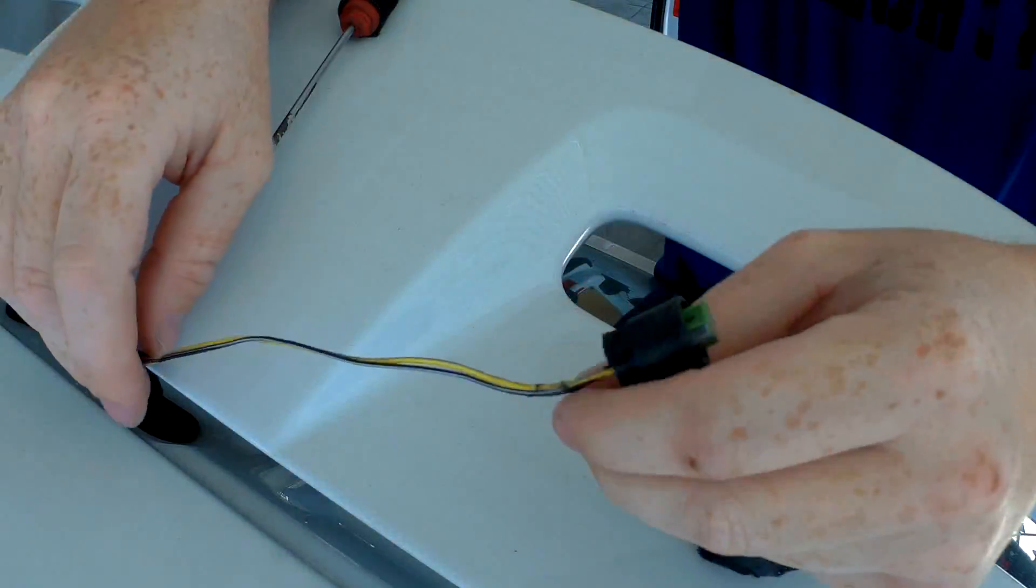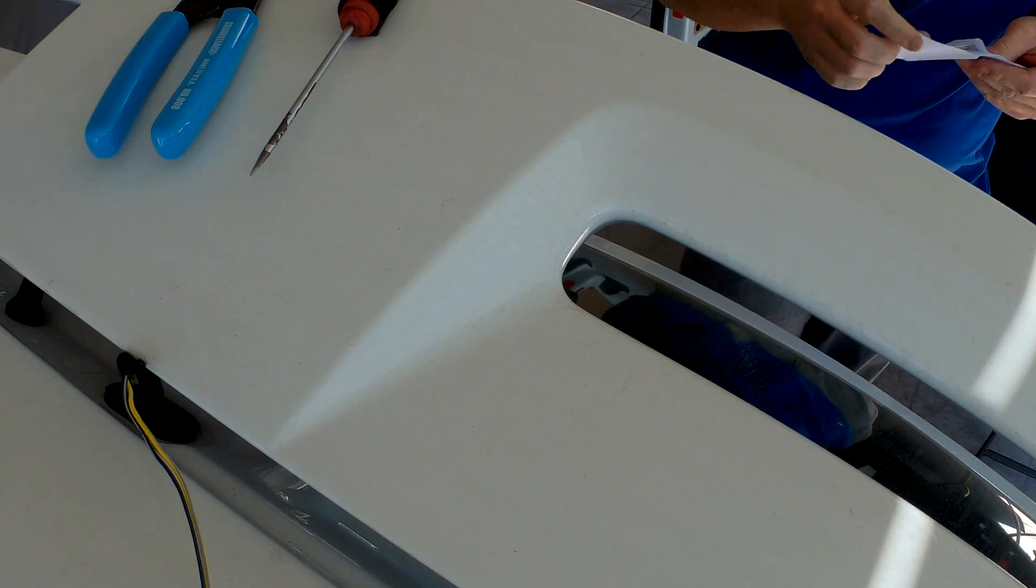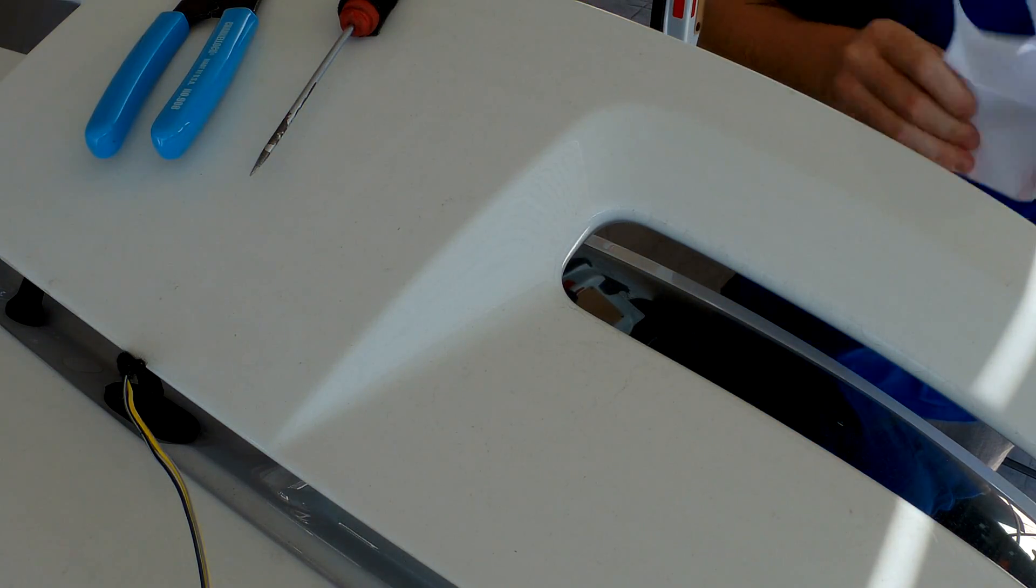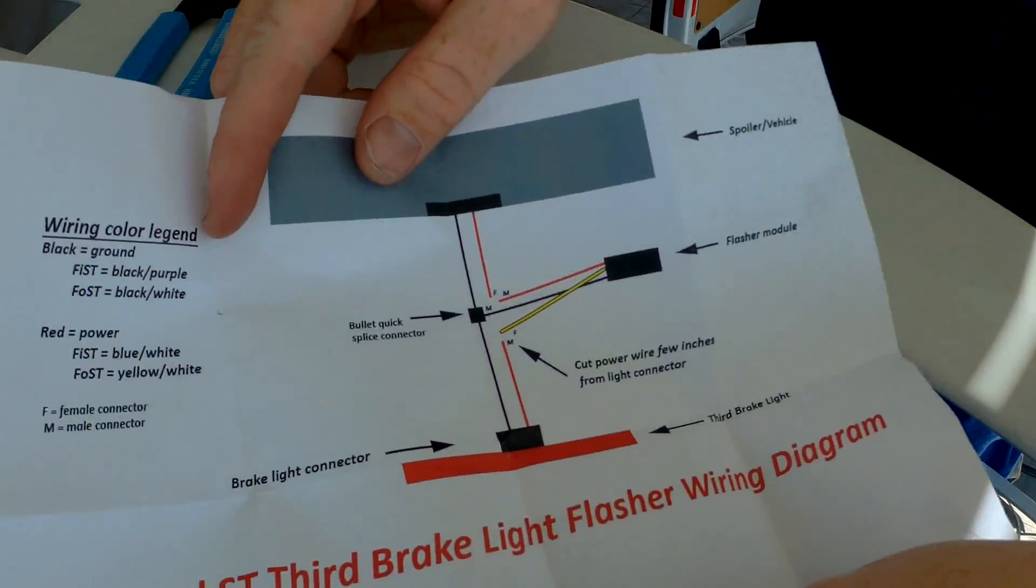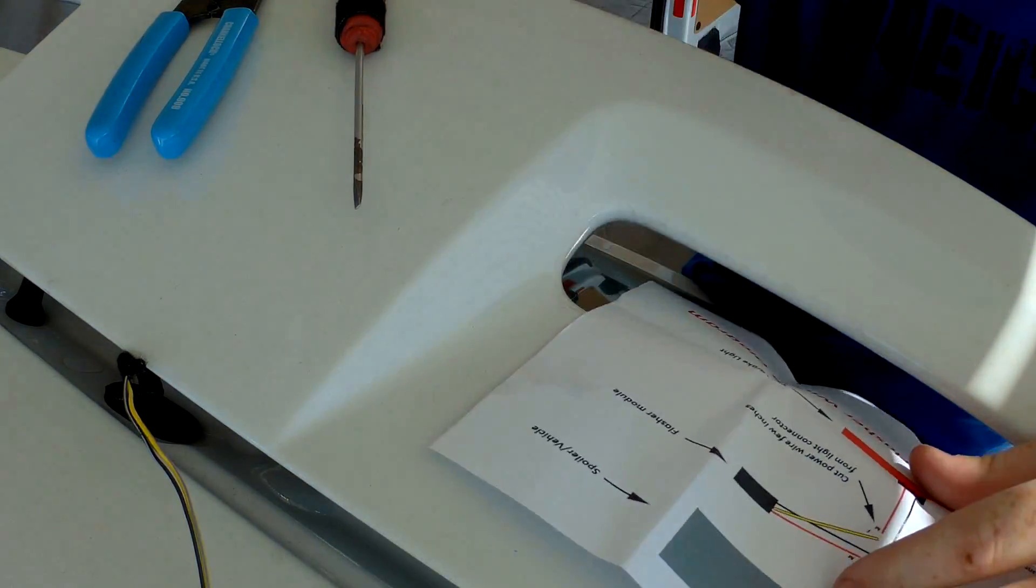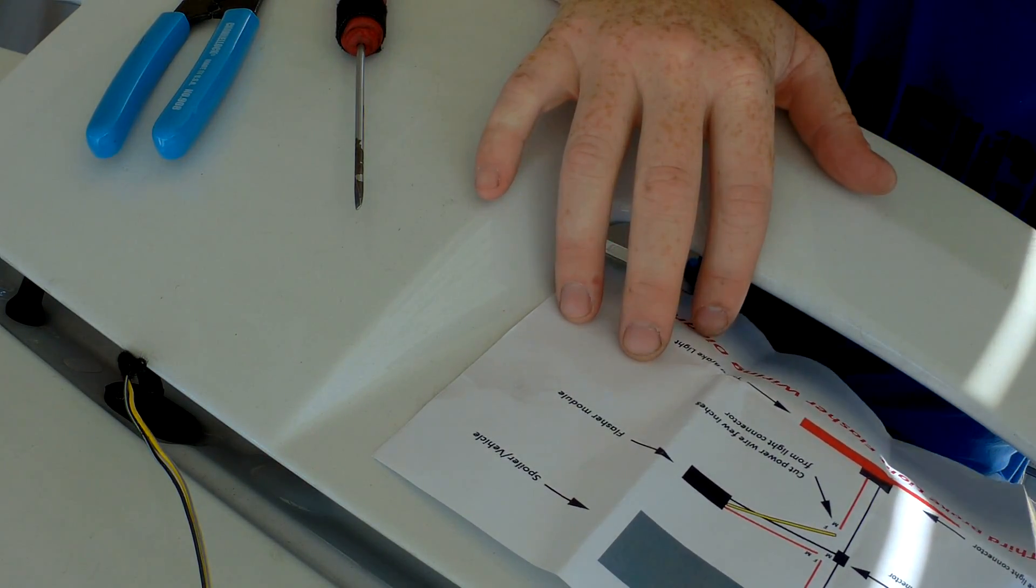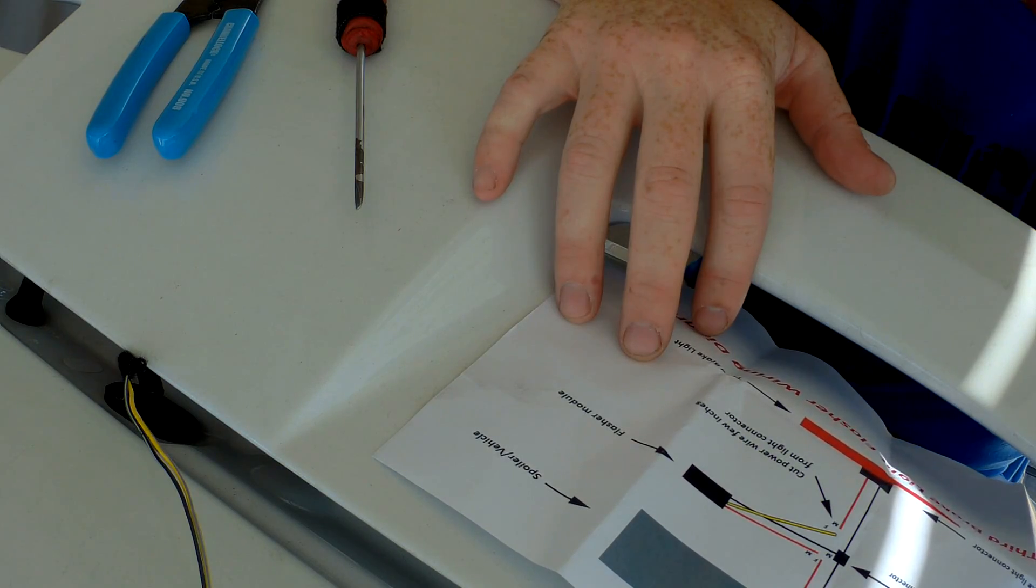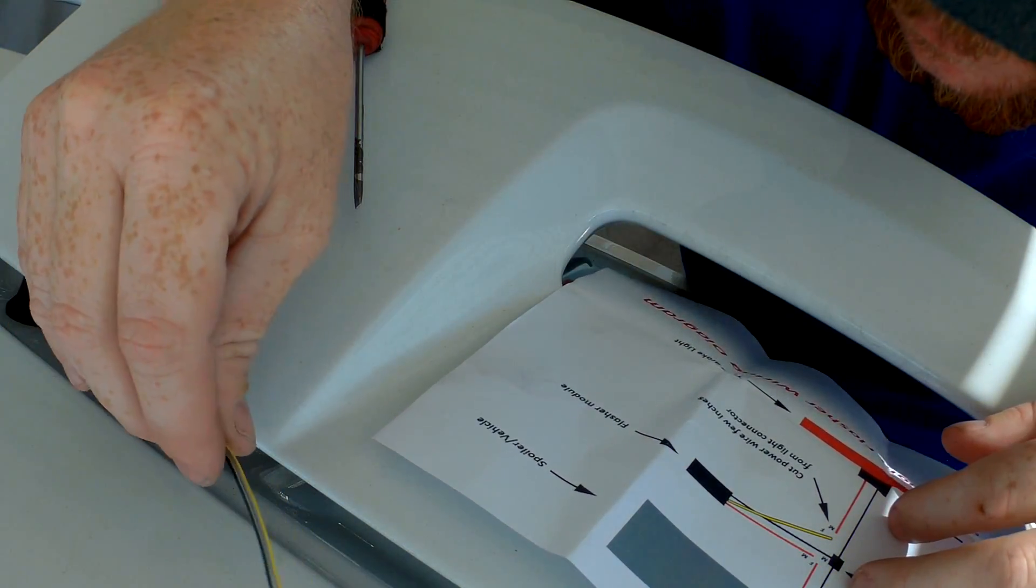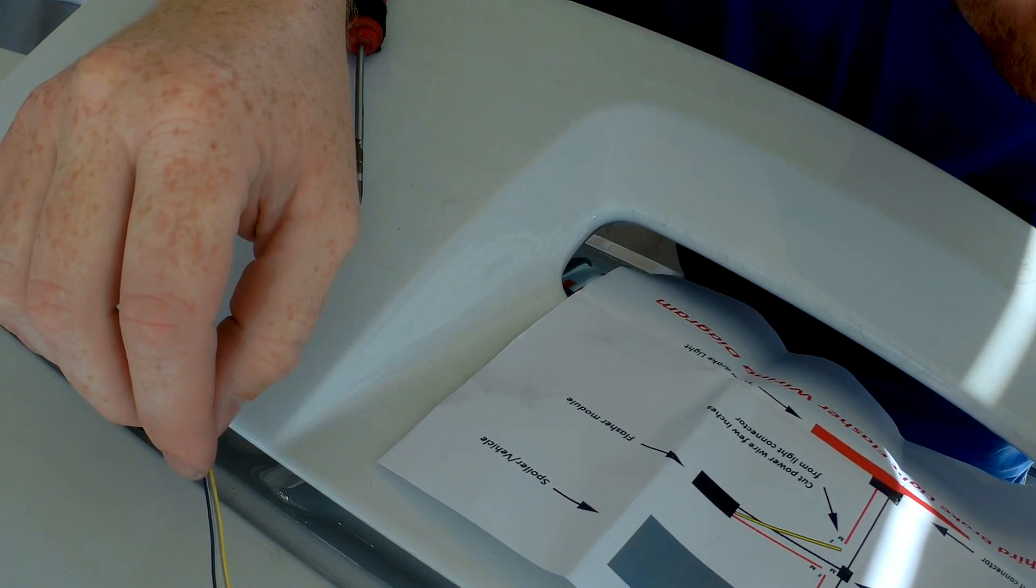Alright, that works, so we got enough wire exposed. I'm going to get this guy up here and take our handy dandy directions here, place them here. Alright, we're going to look for our power wire which is going to be yellow and gray, yellow and white.